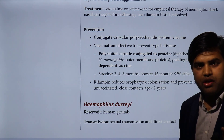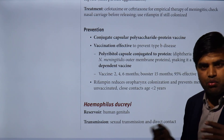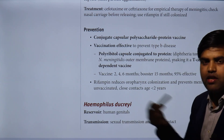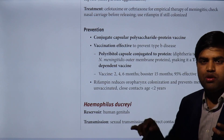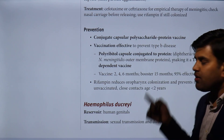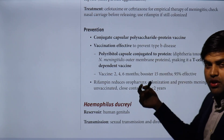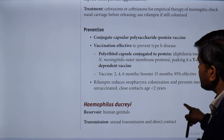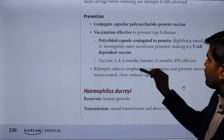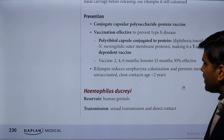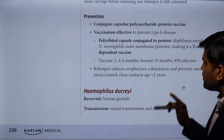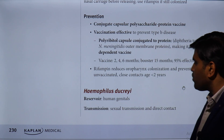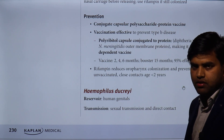Because the polysaccharide alone is not protein in nature, it would not activate T-cell mediated immunity and no memory cells would form — meaning the vaccine would not work long-term. By conjugating with a protein, memory cells are formed and the vaccine provides long-term protection. The vaccine is given at 2, 4, and 6 months with a booster at 15 months; it is 95% effective.